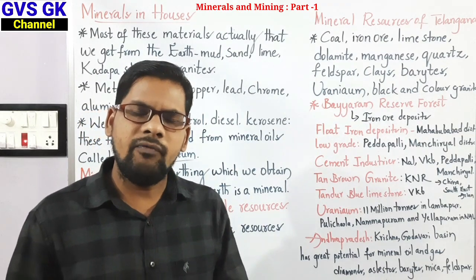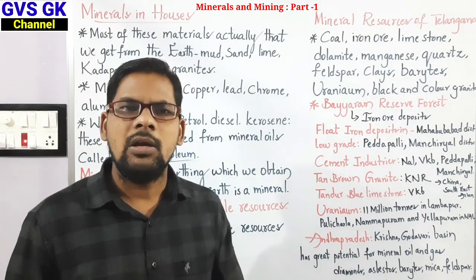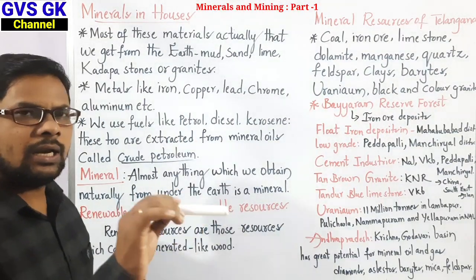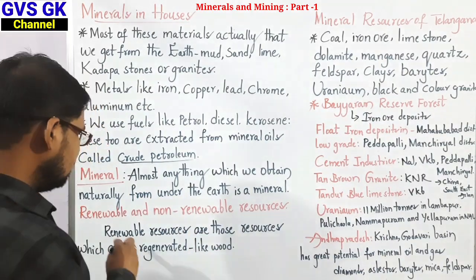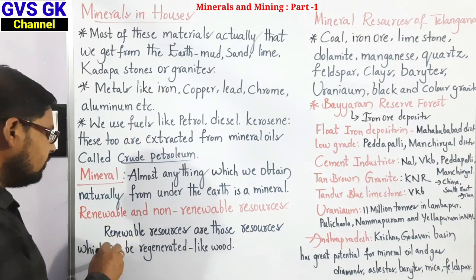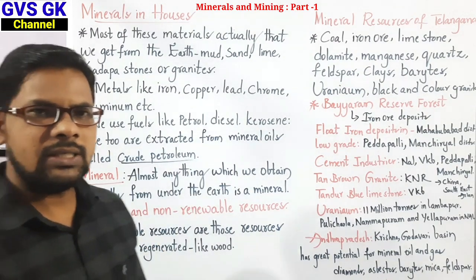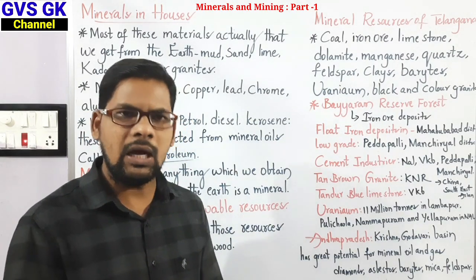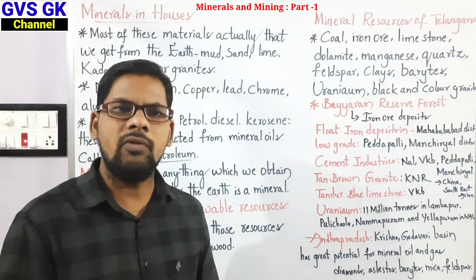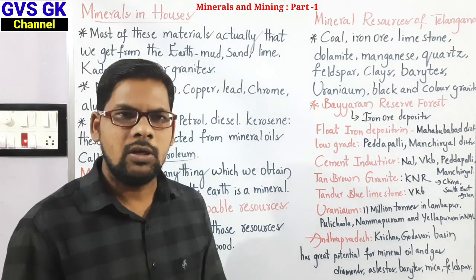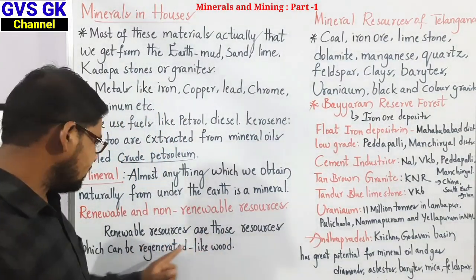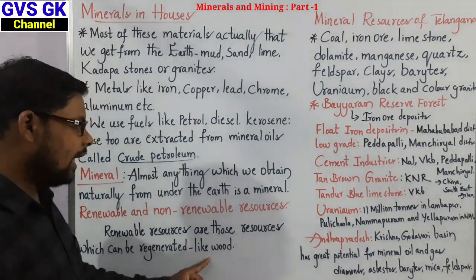If a resource is exhausted from our society, we cannot get it back — those are called non-renewable resources. Renewable resources are those which can be regenerated, like wood. For example, if we cut down a tree and plant a sapling, after some years we can get the same quantity and quality of wood back. That is an example of a renewable resource.